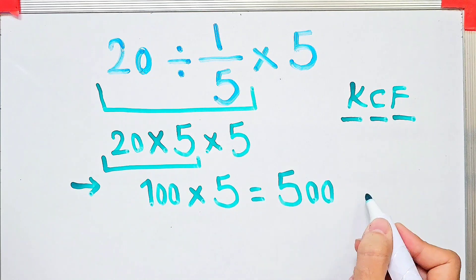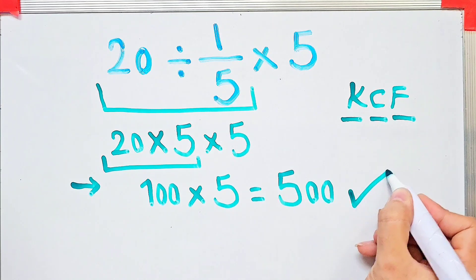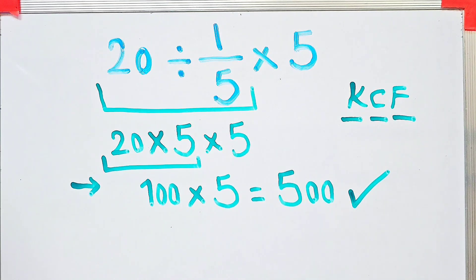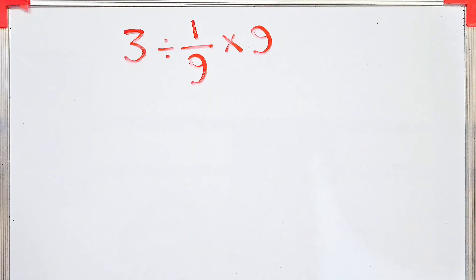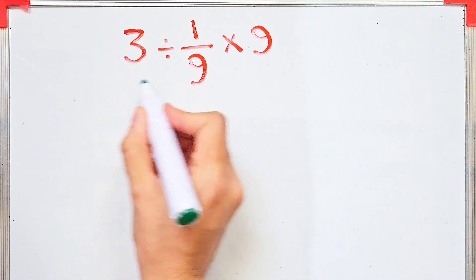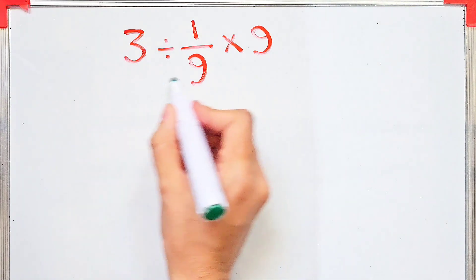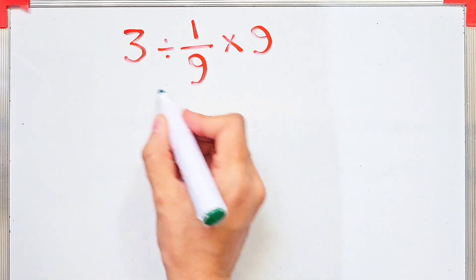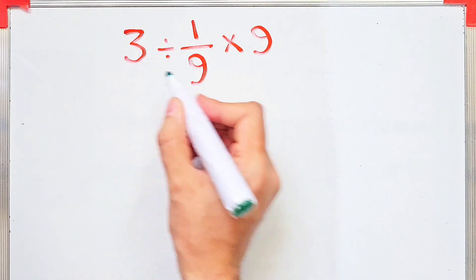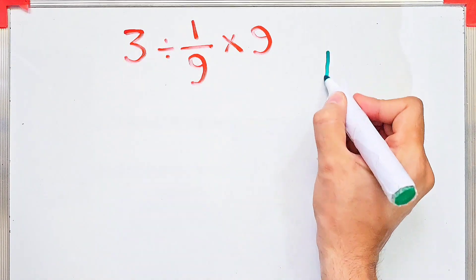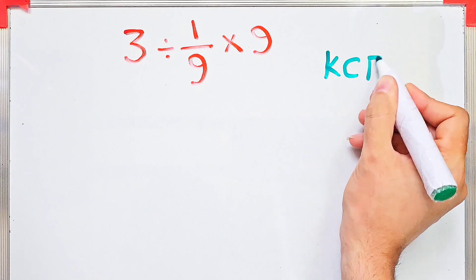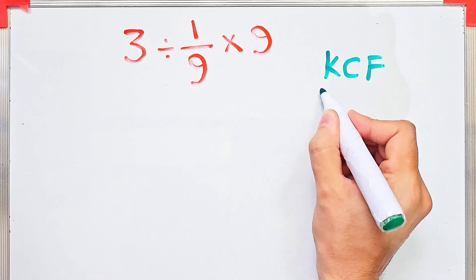Okay guys, if you're ready, let's solve another question using the KCF rule: 3 divided by 1 over 9, then times 9. To solve the first part we follow the KCF rule.